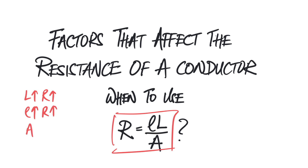And when cross-sectional area increases, the resistance will decrease. So we can see that resistance is directly proportional to length and resistivity, therefore they are on the numerator. And for the cross-sectional area, it's inverse proportion, therefore it's at the bottom. So that will help you to recall the formula.